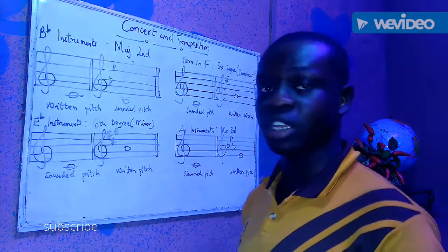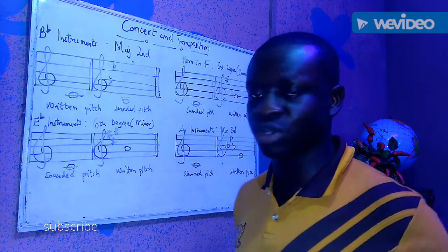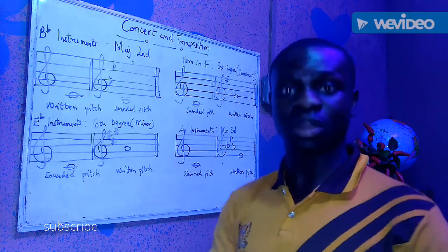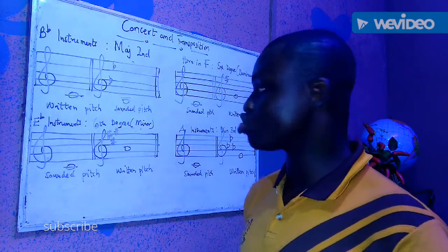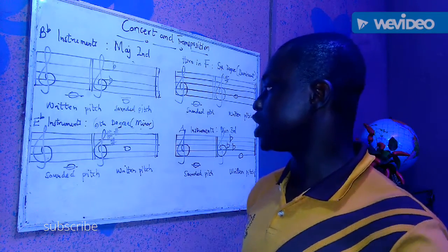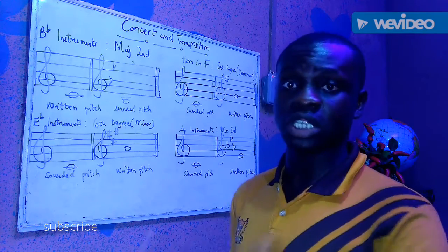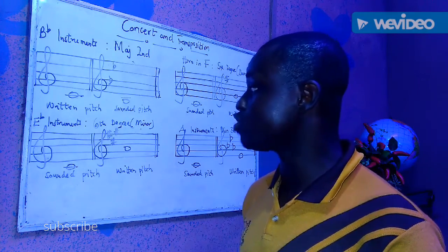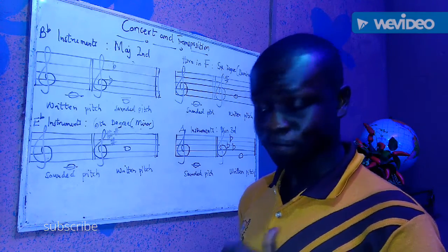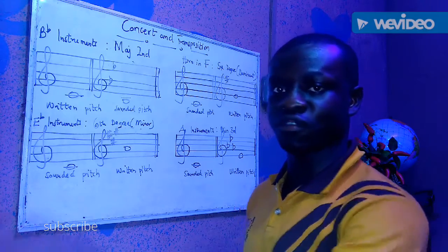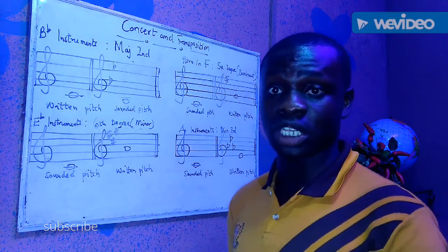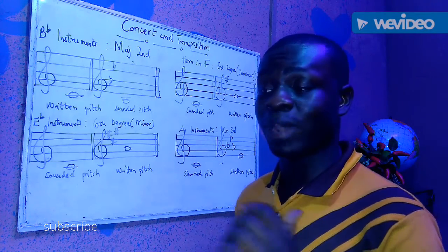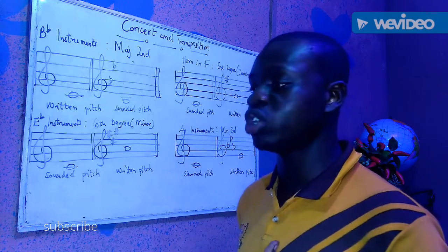That is the trick about B-flat instruments — the notes are written a major second above the sounded pitch. So all the notes you see on music sheets for a B-flat trumpet are written a major second above the sounded pitch. For the E-flat instruments, such as the alto saxophone or other E-flat instruments, they are written from the sixth degree — a minor sixth — from the concert key.